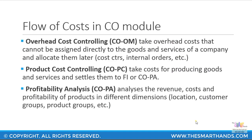Looking at a high-level view of the flow of cost in the CO module: first is overhead cost controlling. When you cannot directly assign a cost to a specified good or service, you use overhead cost controlling to allocate costs. This applies to cost centers or internal orders, where you allocate common costs such as electricity, water, and rental. From those costs allocated to your cost centers or internal orders, you can then allocate further based on the product you are going to manufacture or the service you are going to produce.